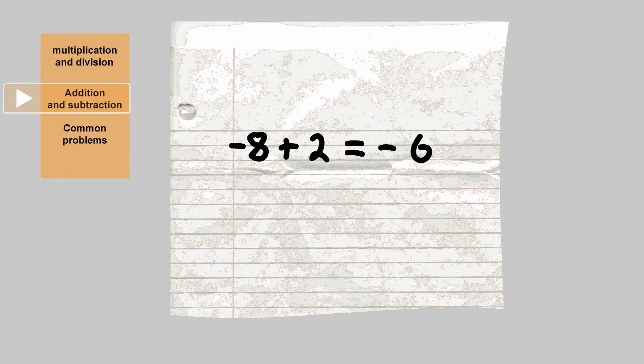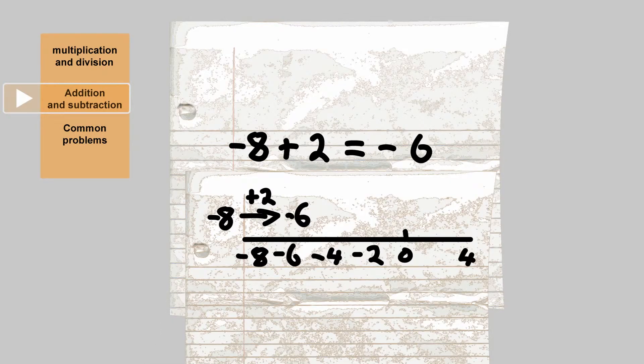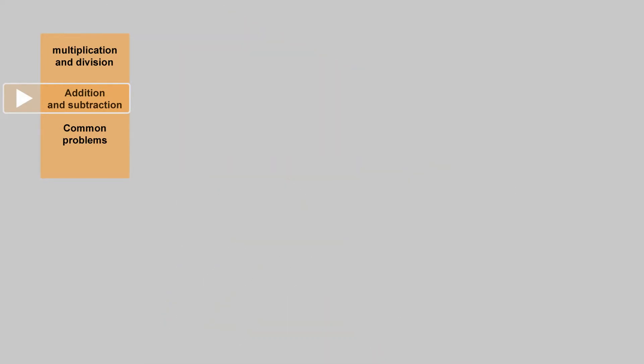Where you have two different signs, things work a little differently. Here you subtract the smaller number from the larger, keeping the sign of the larger number. So minus 8 plus 2 becomes minus 6. You can use the number line to visualize this, as shown here.